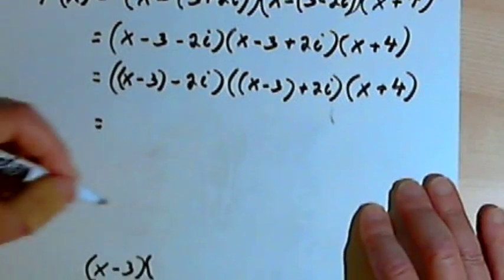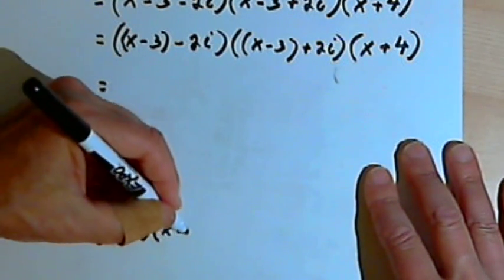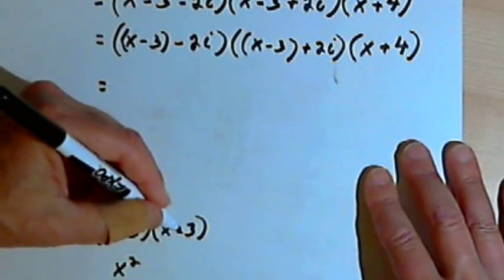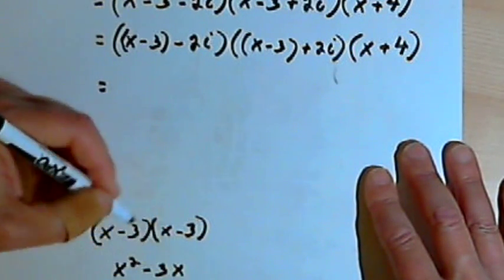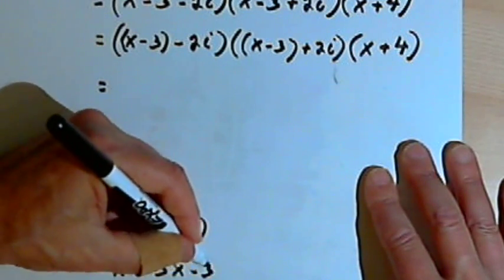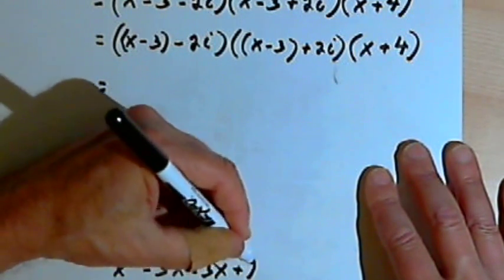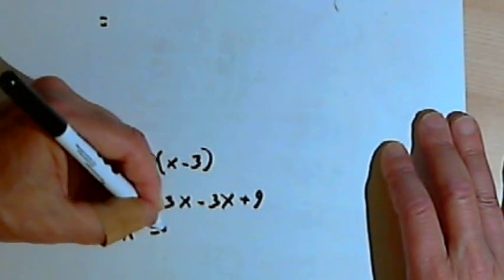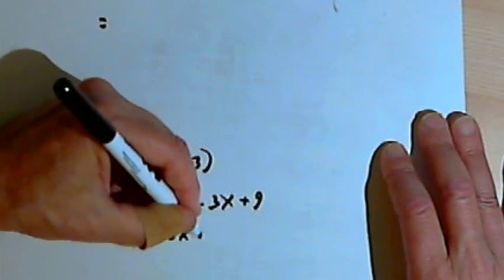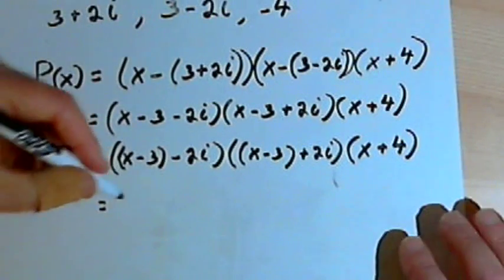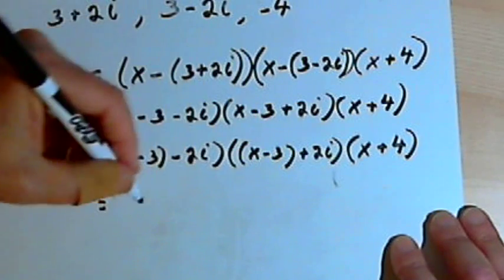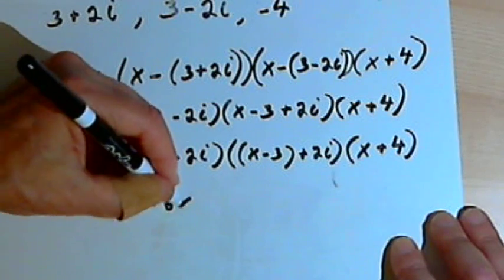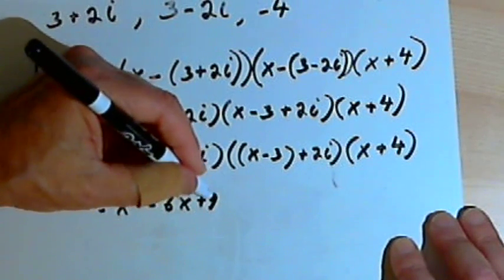If you're not sure about how to do that, just do that somewhere else on your page. So x times x is x squared, x times negative 3 is negative 3x, negative 3 times x is negative 3x, and negative 3 times negative 3 is positive 9. So this is going to turn into x squared minus 6x plus 9.